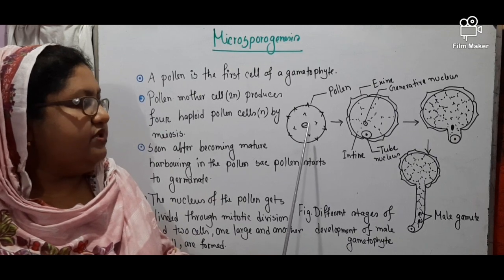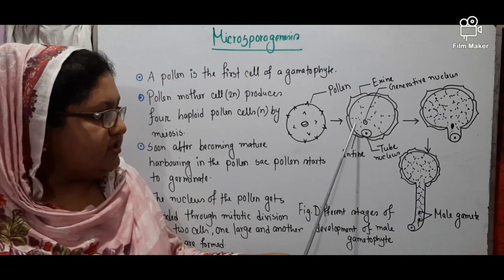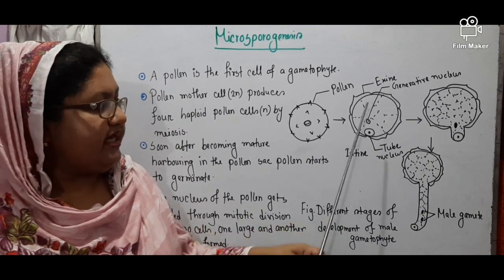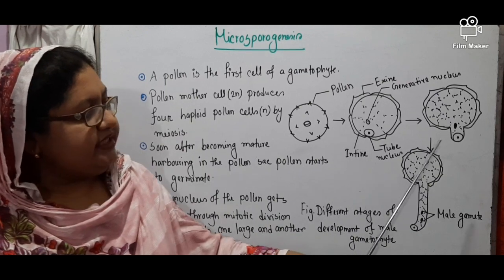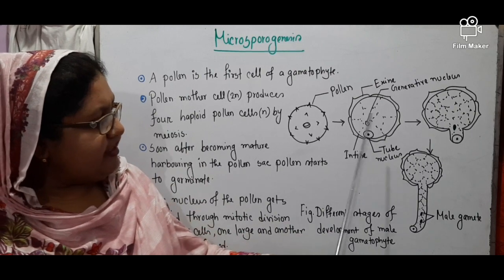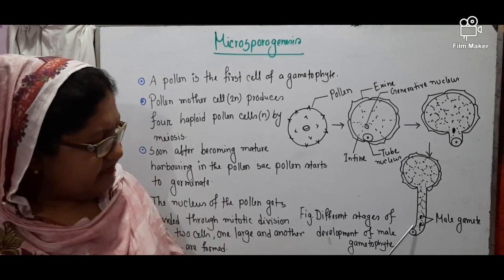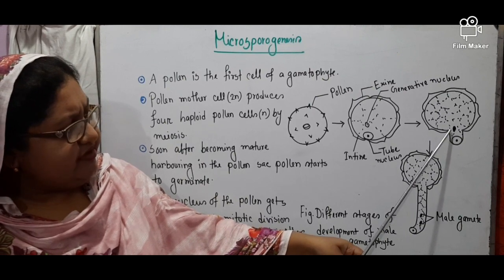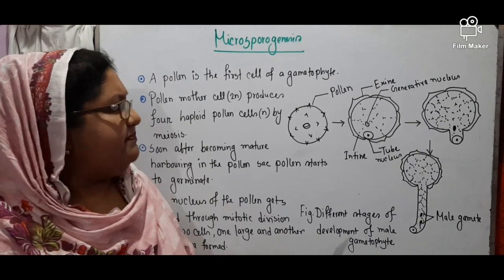Inside this haploid pollen there is a haploid nucleus. This haploid nucleus gets divided by mitosis cell division and produces two unequal nuclei. One is smaller in size, known as the generative nucleus, and another is large in size, known as the tube nucleus. The tube nucleus turns into a pollen tube, and the generative nucleus follows. Two male gametes are produced from the generative nucleus by mitosis cell division. Thus Microsporogenesis is completed.